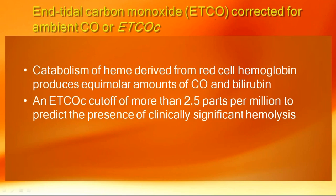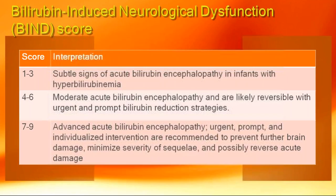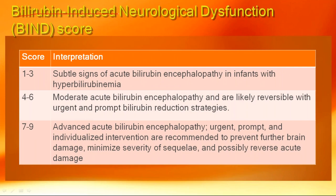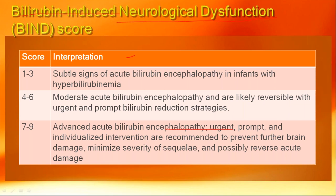Additional newer tests include end-tidal carbon monoxide concentration (ETCO): carbon monoxide is released exclusively from bilirubin metabolism, so a value more than 2 ppm (corrected) indicates high bilirubin production and is abnormal. The BIND score (Bilirubin-Induced Neurological Dysfunction) assesses whether bilirubin has caused neurological damage, scored on several clinical signs — useful in advanced centres.